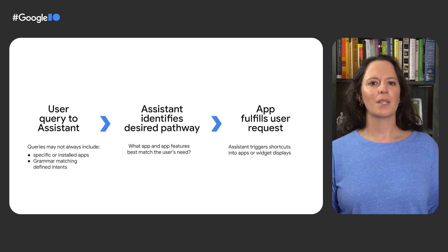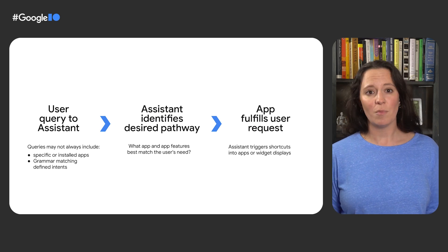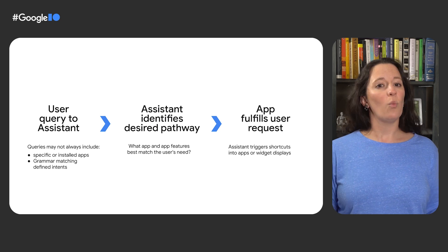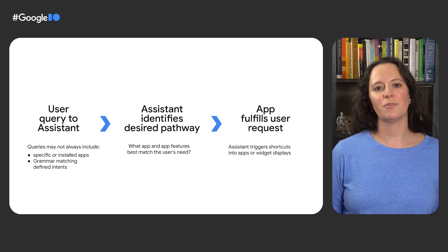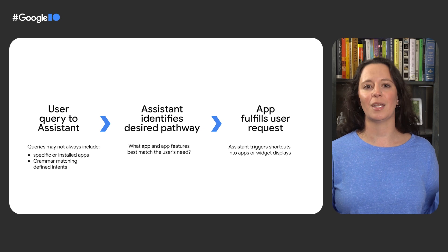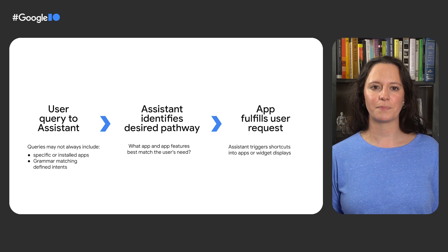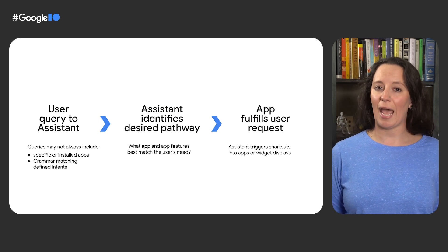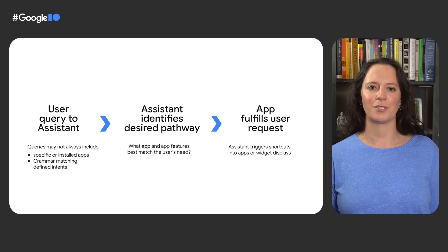For example, if a user asked Assistant for functionality that your app can handle but didn't say the name of your app in their query, or didn't have your app installed, Assistant wasn't able to help them. To improve this, we've launched more ways for Assistant to get users to your app so you don't need to worry about providing precise instructions on how to use your app with Assistant. Two new features — Brandless Queries and App Install Suggestions — are now available immediately for all App Actions developers.